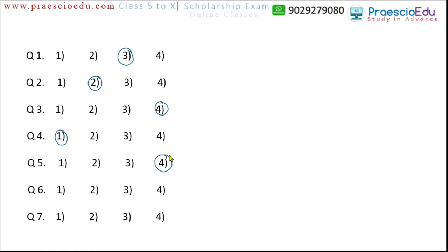Question 6: violet, gray, green, and orange. Gray is not a color of the rainbow, while the other colors are present in a rainbow. So gray is the different one. Question 7: earthquake, tsunami, flood, and accident. An accident is a human mistake or human error — it is not a natural calamity. So accident is the different one.